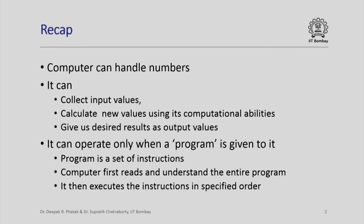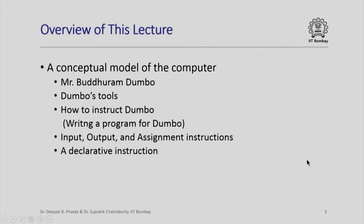We have invented a character and in this lecture we are going to visit that character. His name is Mr. Buddhuram Dumbo. Buddhuram is a Hindi word which actually rhymes with Mr. Dumbo in English — the simpleton character, not very intelligent, cannot think on his own. However, he can diligently perform the actions he is capable of performing, provided we give him instructions for doing each and everything. In short, Mr. Buddhuram Dumbo does not do anything on his own.